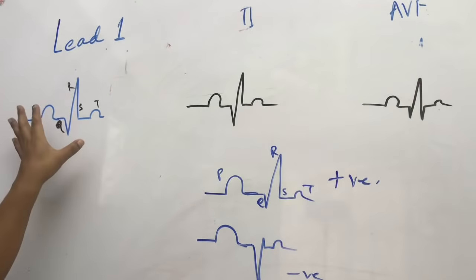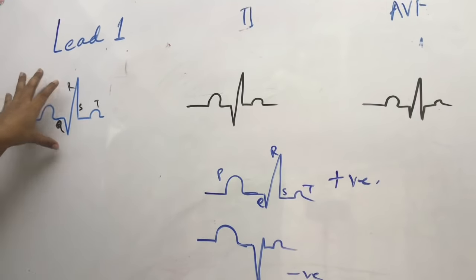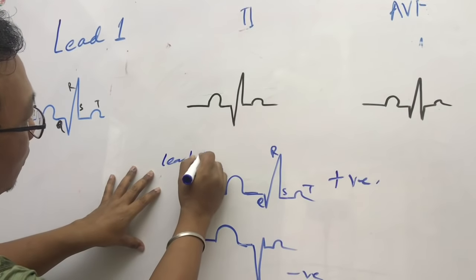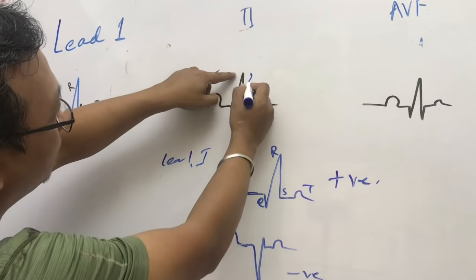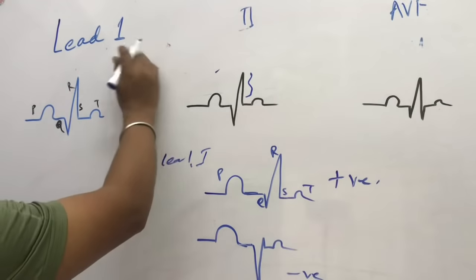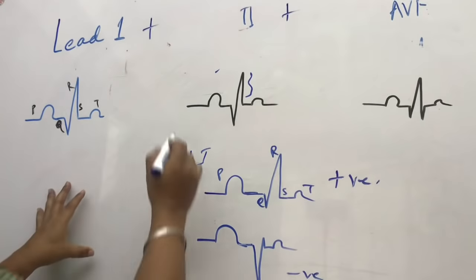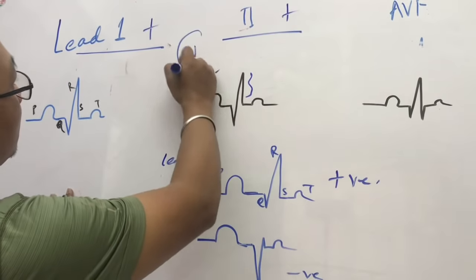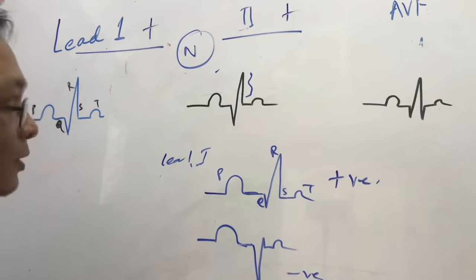If lead 1 is positive and lead 2 is positive, that is a normal cardiac axis. So if you find that lead 1 is positive and lead 2 is also positive, we declare this a normal ECG in terms of cardiac axis — there is a normal cardiac axis.